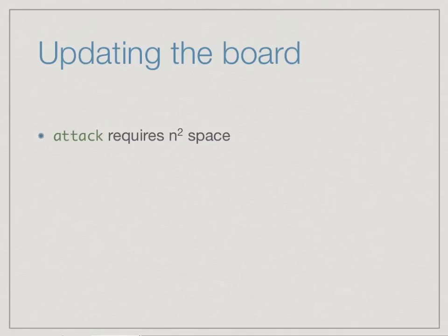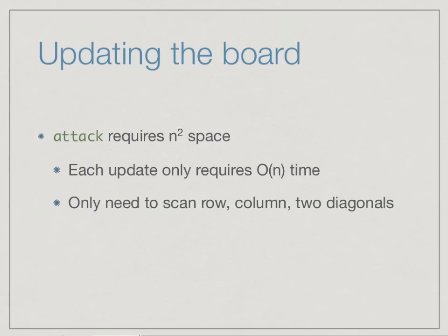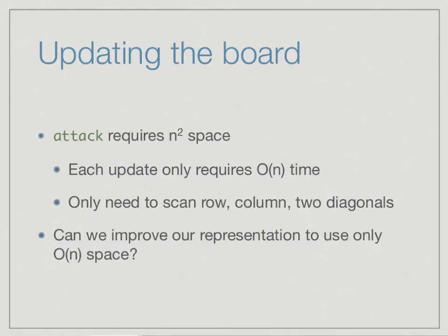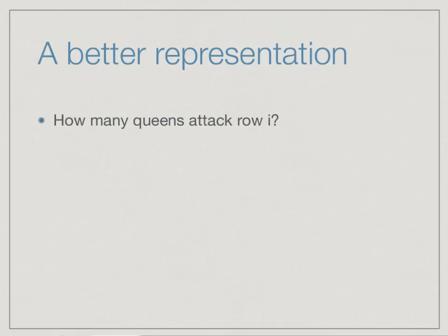This attack array requires O(n²) space. We reduced the board from an n×n array to a linear array; can we do the same for the attack information? Although the attack array itself is quadratic, the updates — adding or removing a queen — only require examining along its row, column, and diagonal, which is a linear number of cells. But can we reduce the representation itself to O(n) space?